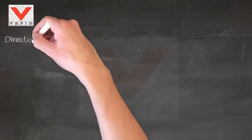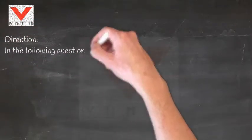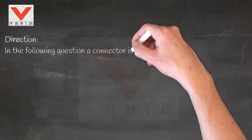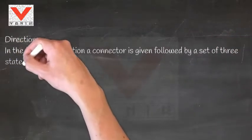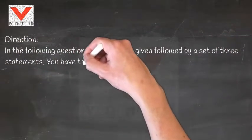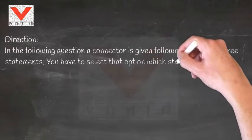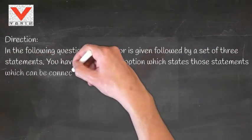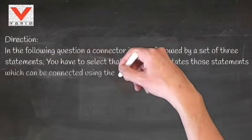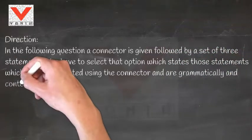Vanak English tips. Direction: In the following question, a connector is given followed by a set of three statements. You have to select that option which states those statements which can be connected using the connector and are grammatically and contextually correct.